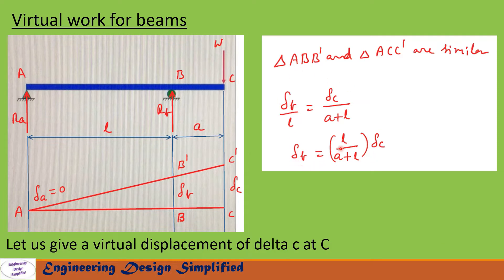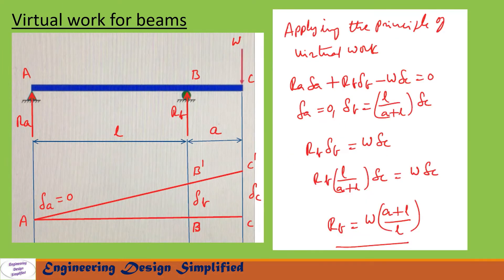Using the similar triangles principle, we can write delta B in terms of delta C as: delta B equals L divided by (A plus L) into delta C. Now let us write the virtual work equation: Ra into delta A plus Rb into delta B minus W into delta C equals zero. The negative sign is because W is acting vertically downwards while the displacement is given vertically upwards.